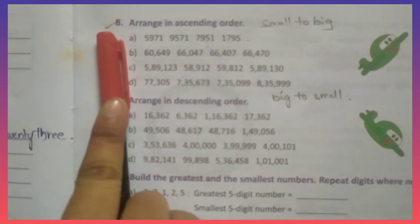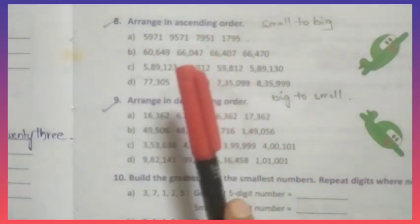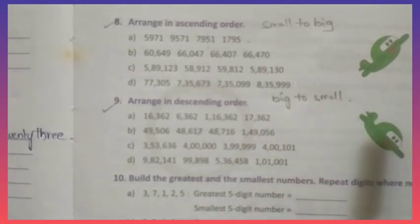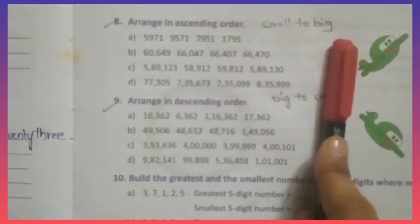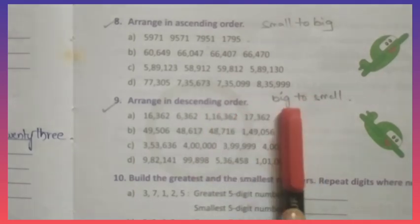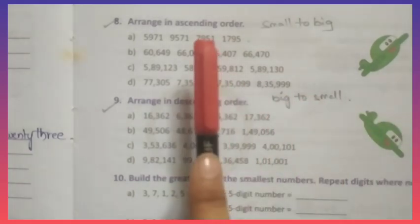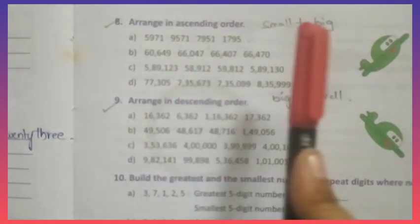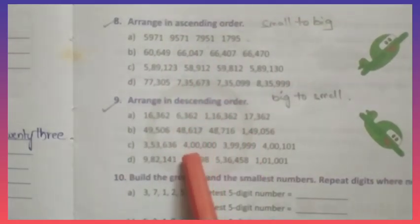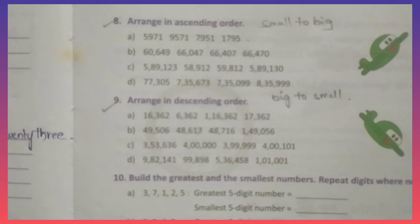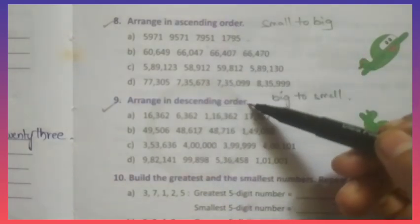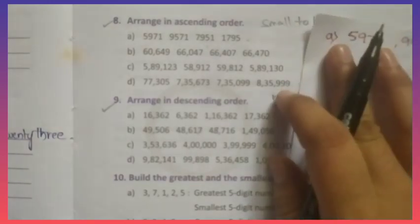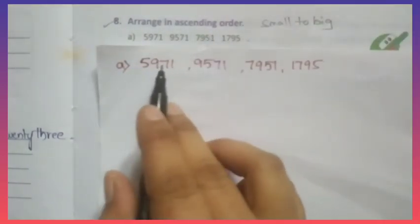Now look at the 8th bit: arrange in ascending order. You have to write this bit in your fair notes. Ascending order means small to big. Descending order means big to small. You have to arrange these numbers from small to big, and those numbers from big to small. To write ascending or descending order, we need to know how to compare numbers.